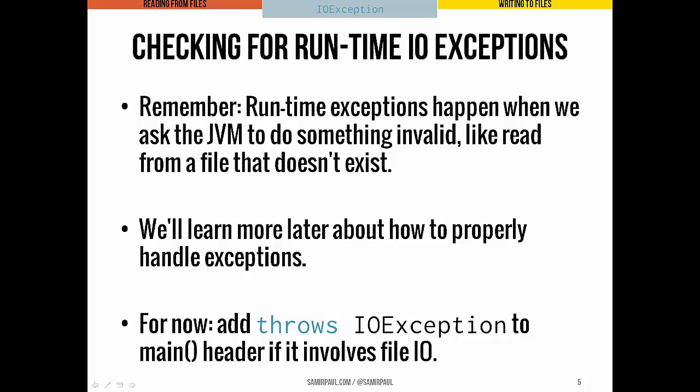IOExceptions are usually pretty serious — so serious, actually, that we call them a checked exception, which means the program has to at least acknowledge that we could throw an IOException. So if we're reading from a file or writing to a file, we have to make sure we've acknowledged that we're watching out for an IOException. What this means is that we have to add one simple phrase to the header of our main method in any program using text file input: throws IOException. If a program actually runs into an IOException, the Java Virtual Machine is going to halt execution and throw that error message.